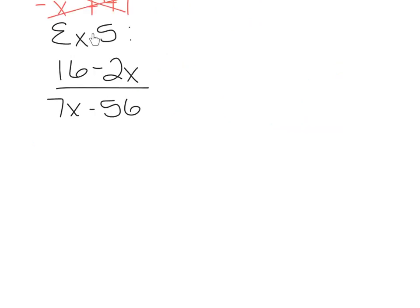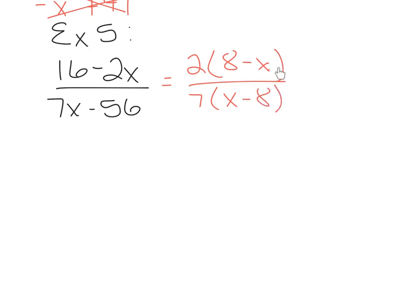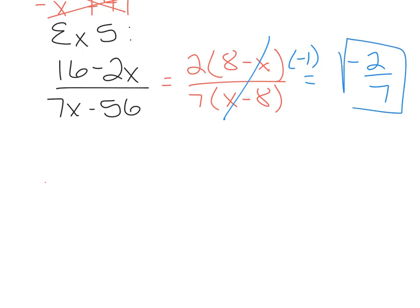Example 5, still on page 140, says 16 minus 2x over 7x minus 56. In the numerator there's a GCF of 2, leaving 8 minus x. In the denominator there's a GCF of 7, leaving x minus 8. These are opposites: 8 minus x and x minus 8 have opposite signs on each term. When opposites cancel, they leave negative 1 in the numerator. So the answer is 2 times negative 1 over 7, which is negative 2 over 7.